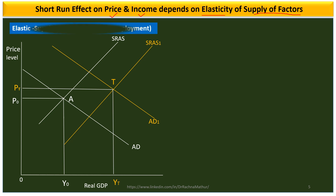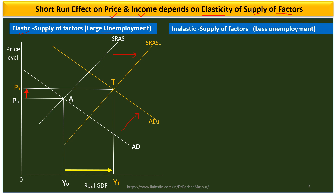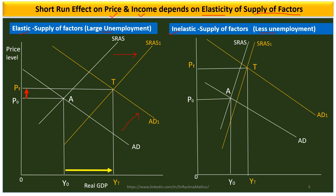If the supply of factors of production is elastic, that means there is large unemployment in the economy. With an increase in aggregate demand, aggregate supply will also increase as unemployed factors come into production. This leads to a large increase in income and a very small increase in price. But if the supply of factors of production is inelastic, the economy is near full employment, so an increase in aggregate demand leads to a large increase in price and only a small increase in income.